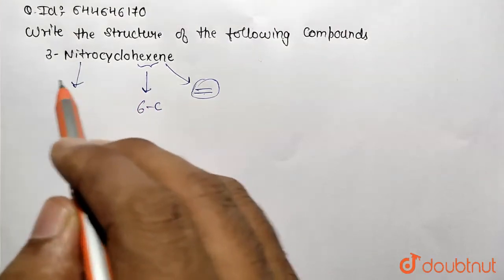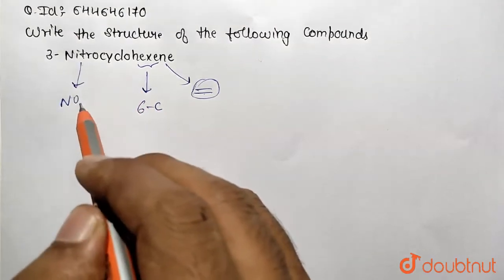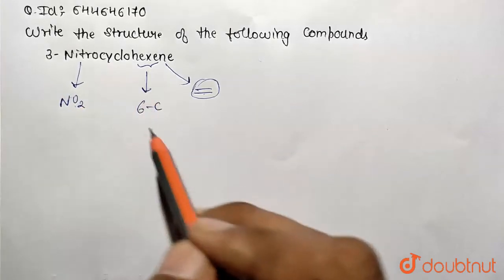The position of nitro indicates three, so the nitro group is connected at the third position of this cyclohexene.